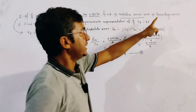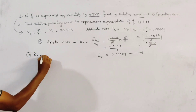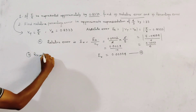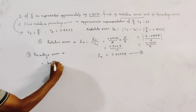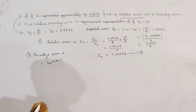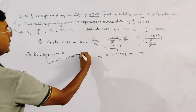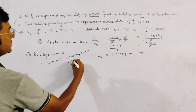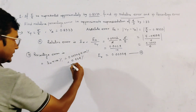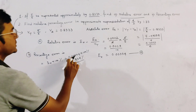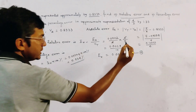And the percentage error: we know that percentage error is given by Er multiplied by 100%. So this is 0.00004 × 100%, which equals 0.004%. This is the percentage error.